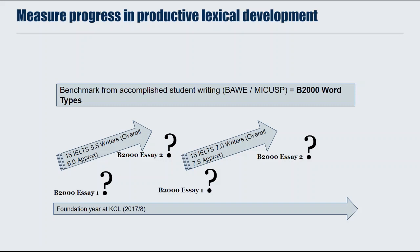And the same for a higher-level group — IELTS 7 writers, fifteen of those, with an overall IELTS score of approximately 7.5. How much beyond-2000 vocabulary was there at the beginning of the year, and how much at the end? In other words, how close do they get to that benchmark — do they get into that threshold? This was with about an hour's vocabulary and discourse tuition, lots of texts for native speakers, and subject specialism modules.